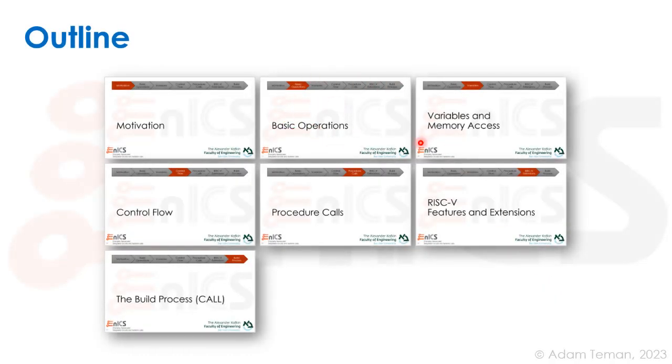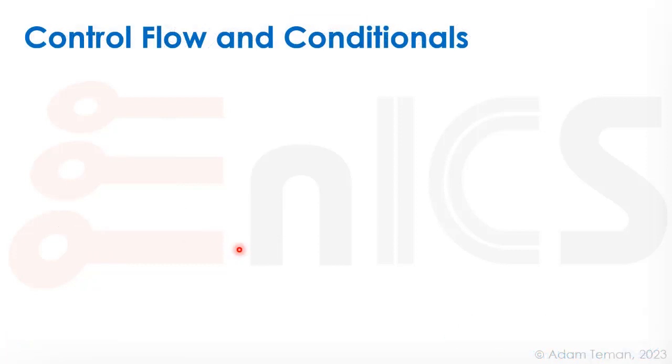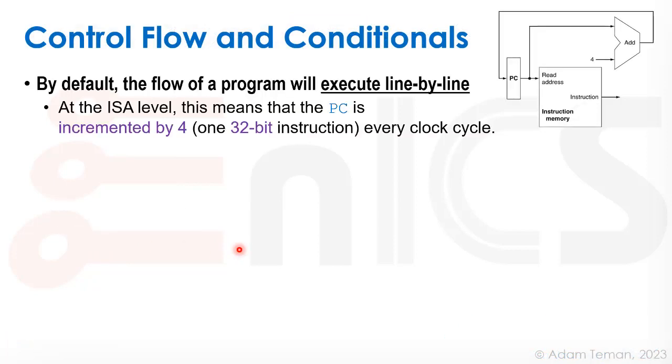At this point we've gone over the basic operations and then we added variables and memory access. Now we're going to move over to an important part of making a Turing machine, which is control flow. So by default, the flow of a program will execute line by line. That means that at the instruction set architecture level, the PC, the program counter, is incremented by four every clock cycle.